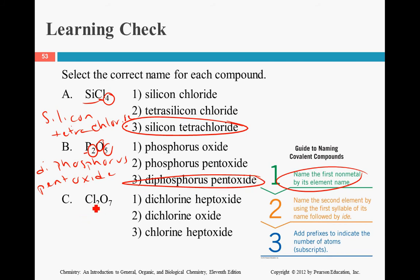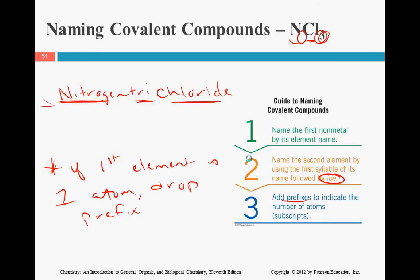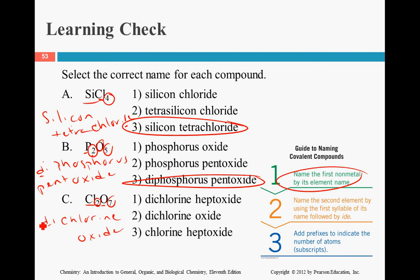Cl is chlorine, and there are two of them — we had two before and it was 'di'. The next one is oxygen, which becomes oxide. We need to figure out what seven is: seven is 'hepta'. Remember that A gets dropped off because of that O being next. So the answer is dichlorine heptoxide.